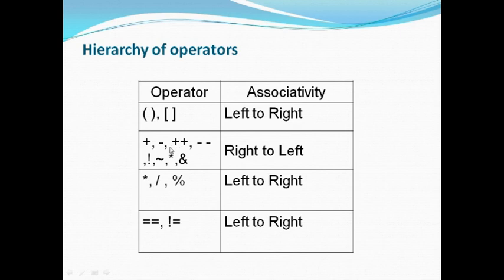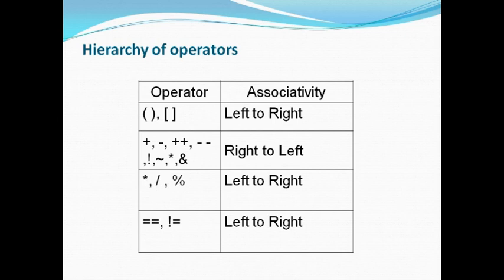If an expression includes two operators with the same precedence — for example, star and division both have the same precedence — we need to determine whether to solve star first or the expression with slash. In this case, we use associativity. When an expression includes star and slash, it must be solved from left to right. This is where associativity applies: when two operators share the same precedence, we solve based on their associativity.